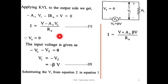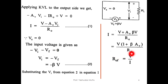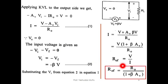Substitute equation two into equation one. The minus times minus gives a plus, so: i = (V + Av·β·V) / Ro = V(1 + β·Av) / Ro. Since Rof = V/I, rearranging gives Rof = Ro / (1 + β·Av).